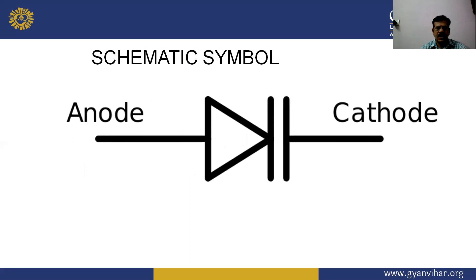The symbol of the Varactor diode has two terminals: the anode, which is the positive terminal, and the cathode, which is the negative terminal. It is a two-terminal device.